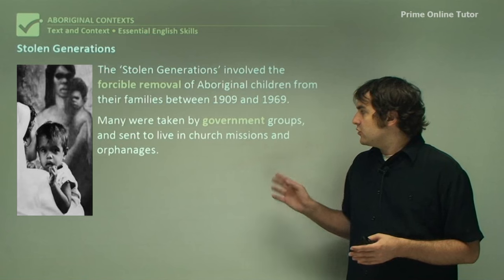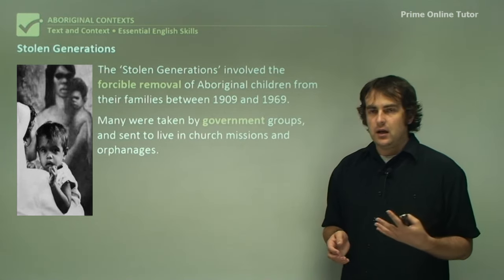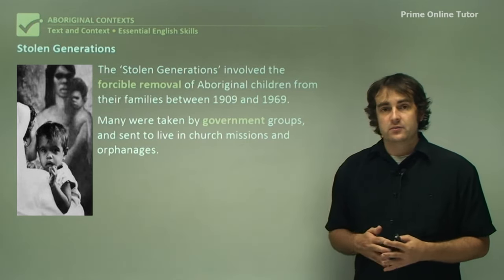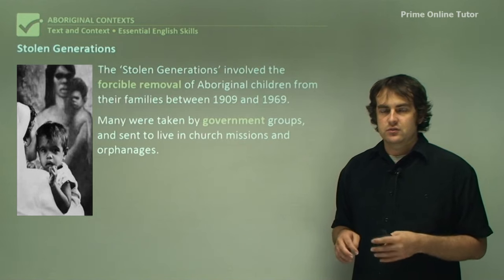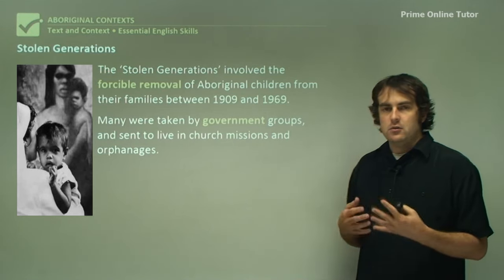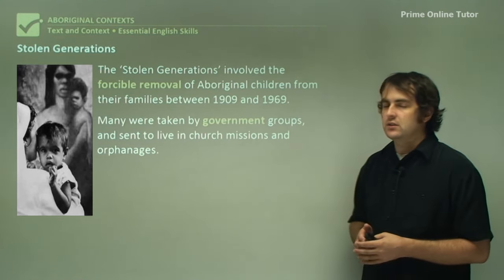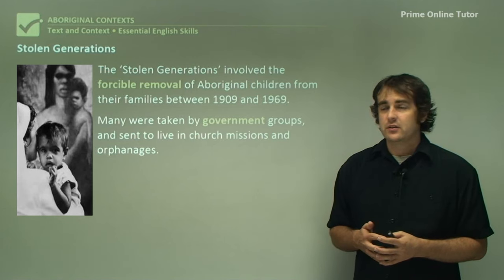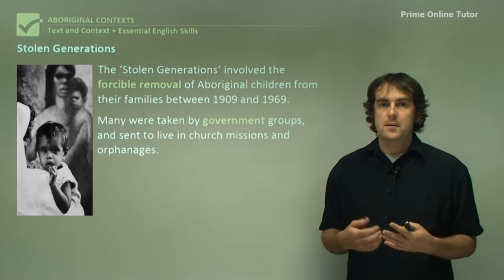Many were taken by government groups and sent to live in church missions and orphanages - taken not only from their homes but sent to places which tried to indoctrinate many children with European values. Obviously with the church, Christianity was a huge part of that. Various orphanages tried to educate them and get them to basically live like Europeans. They felt that was the best way to apparently civilise Aboriginal people - which, if you think about it, is a really silly idea, and it represents how horrible it must have been for those children to be completely removed from what they call home, their family, and their identities.